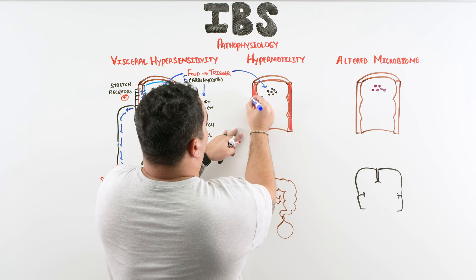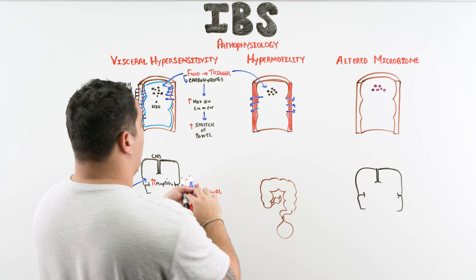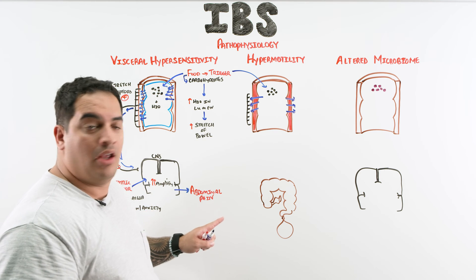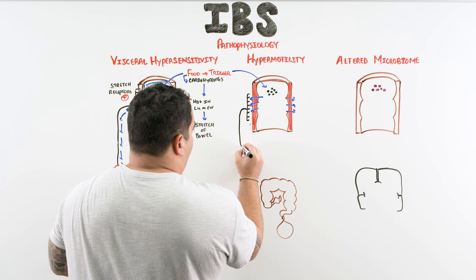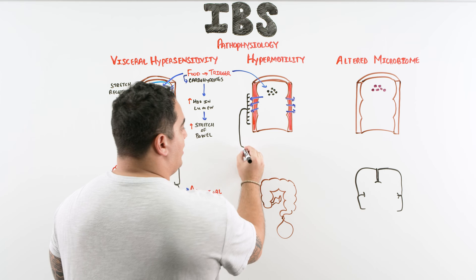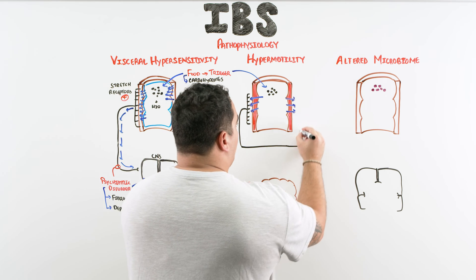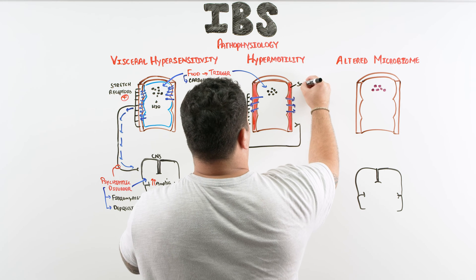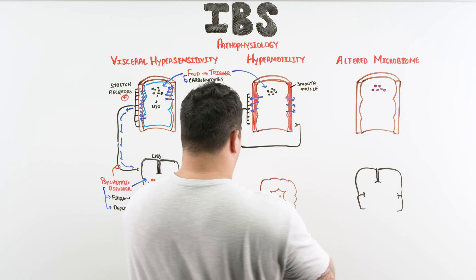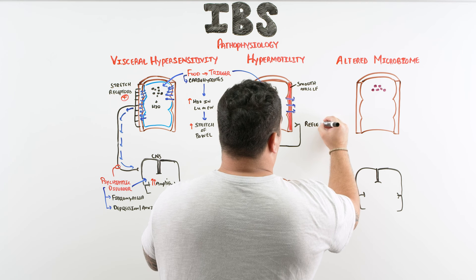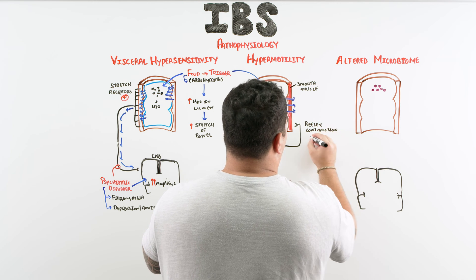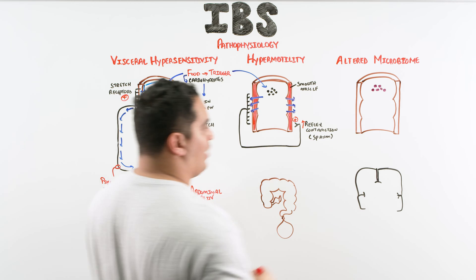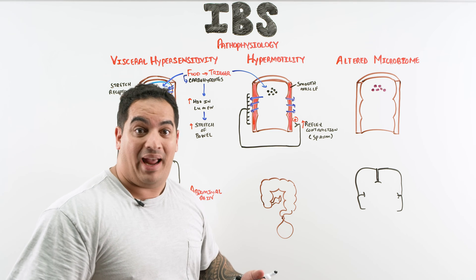Activating those stretch receptors will induce abdominal pain, but there's another concept: these stretch receptors can create what's called a reflexive movement via the enteric plexus, causing contraction of the smooth muscle within the bowel wall. If I stimulate a very powerful reflex contraction — sometimes called a spasm — that intensely stimulates the bowels to undergo spasm.